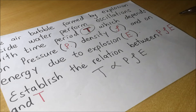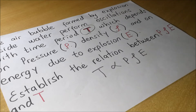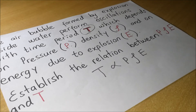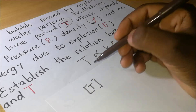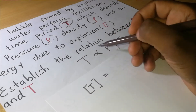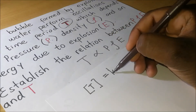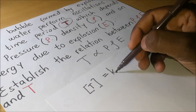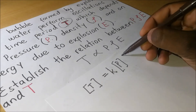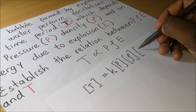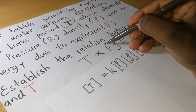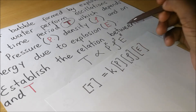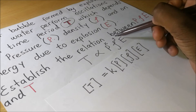Since we are going to use dimensional analysis, here is how we proceed. We remove the proportionality sign and introduce a constant of proportionality K, so that T equals K times P to the power x, times rho to the power y, times E to the power z. Our role is to find the values of x, y, and z.